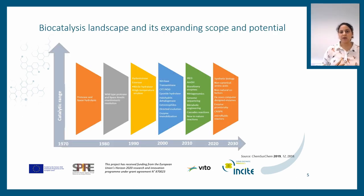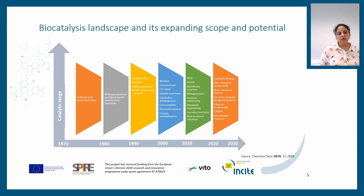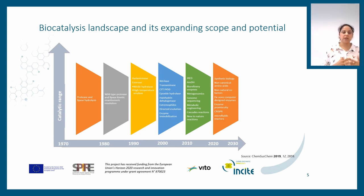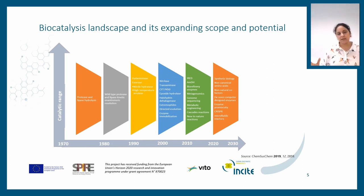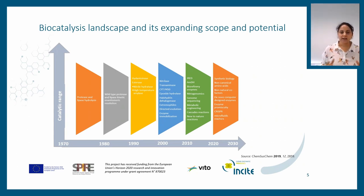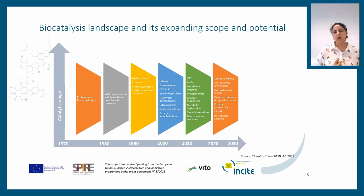Looking at the biocatalysis landscape and its potential today: enzymes were traditionally used in food, beverage processing, and detergents. After 1970 or so, it became evident that isolated enzymes could also be used to catalyze non-natural compounds. In the last 40 years, biocatalysis really emerged from a fringe technology to a very established technology with relevant industrial potential. Especially in the last two decades, biocatalysis has benefited from two very important technologies of the 21st century: biotechnology and information technology.